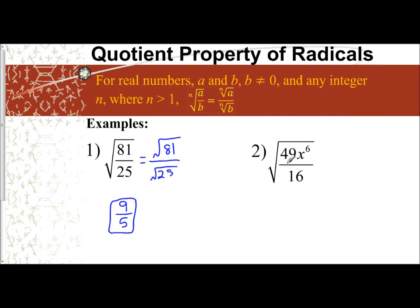It's the same over here. I have the square root of 49x to the sixth over 16. Split it across the fraction, so I have the square root of 49x to the sixth over the square root of 16.